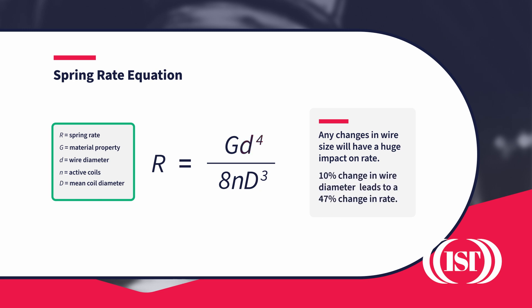Coil diameter is almost as important. A 10% change here gives a 33% change in rate. Number of coils is just a simple number, so a 10% change here gives a 10% change in rate.